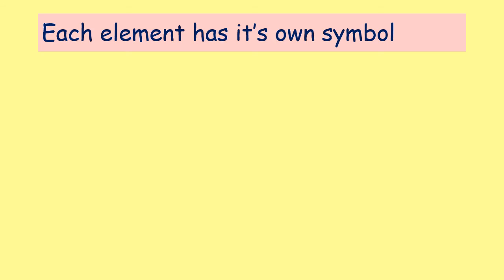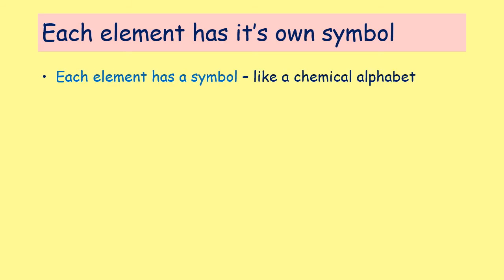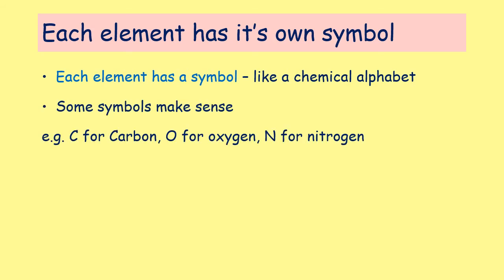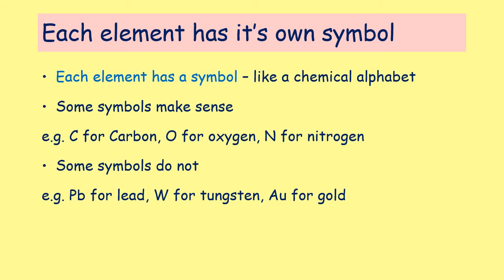On the periodic table, each element has its own symbol, and that symbol has either one or two letters. These symbols are like a chemical alphabet. Some of the symbols make sense — for example, C for carbon, O for oxygen, N for nitrogen. But some symbols don't immediately make sense: PB for lead, W for tungsten, and AU for gold. However, there is a reason for that — some elements used to have other names, or were discovered in another country, and the symbol comes from the name of the element in that country.